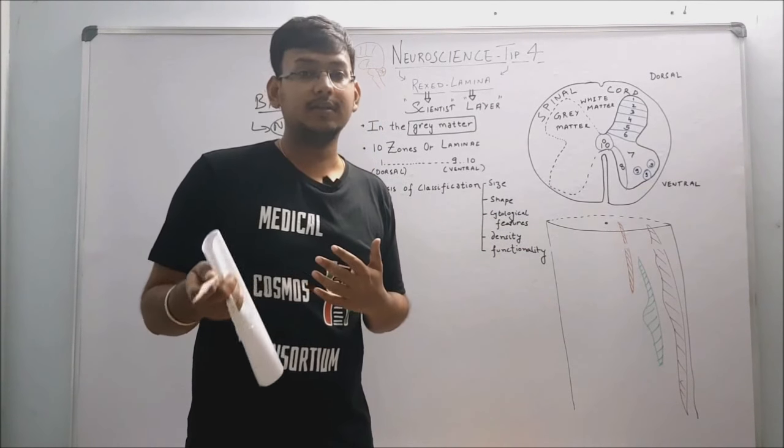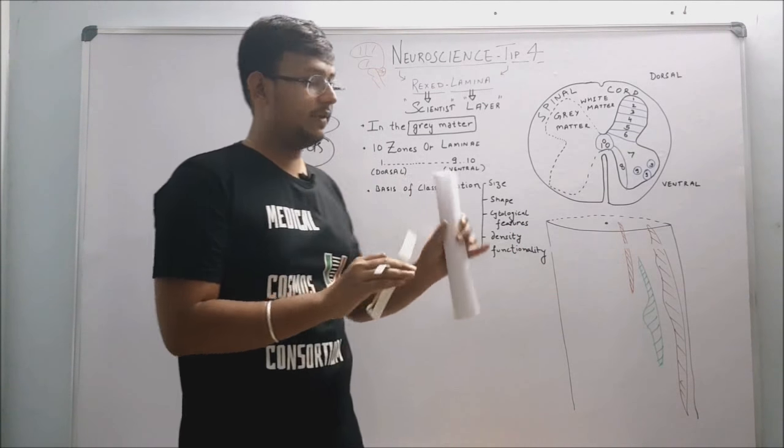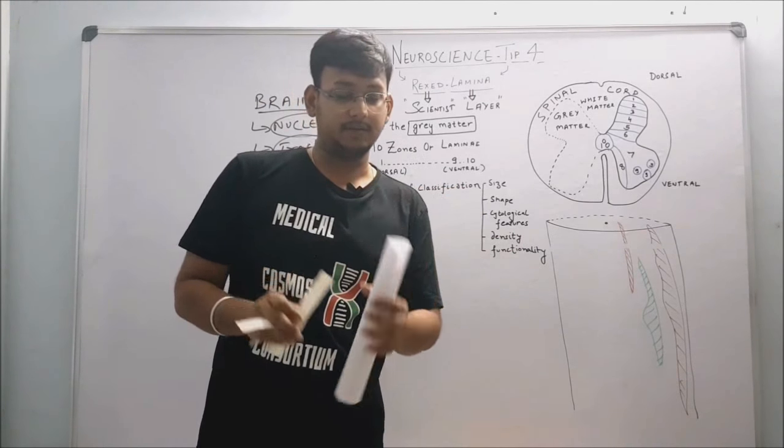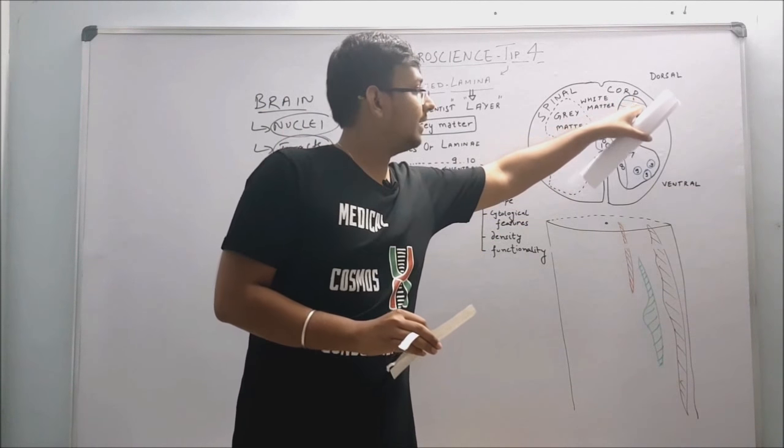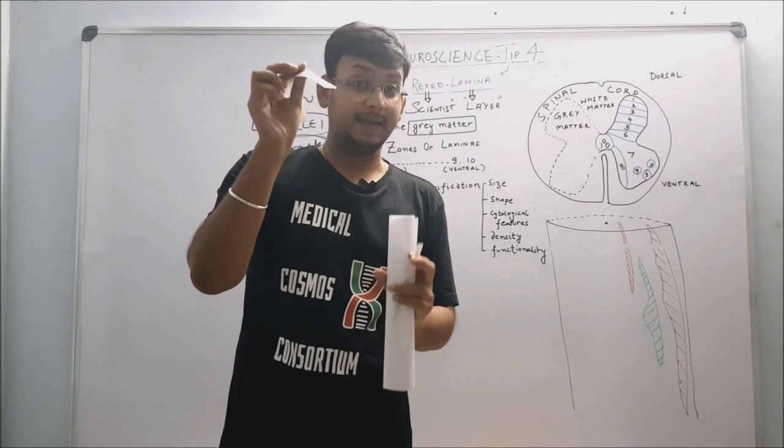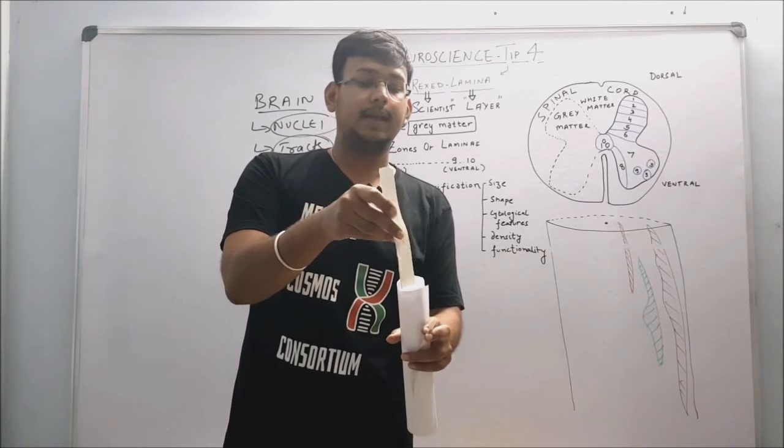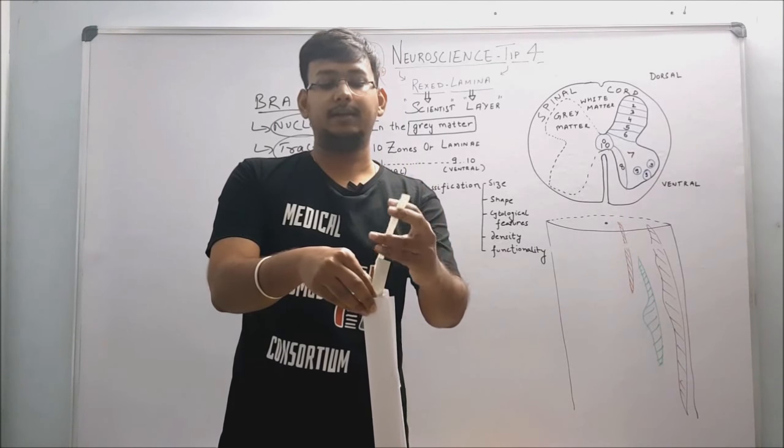So what we are doing - but before that, we have to understand its 3D perspective. This is spinal cord, for example. Let us take first and second lamina. So I'm putting this lamina gray matter of the spinal cord like this, and secondly I'm putting it like this.